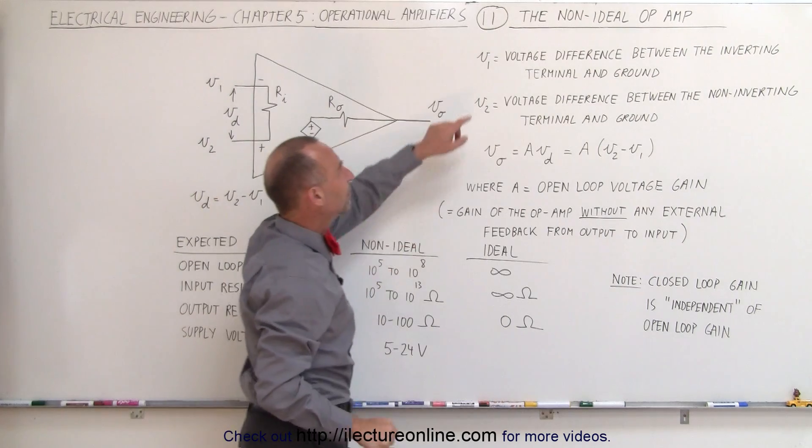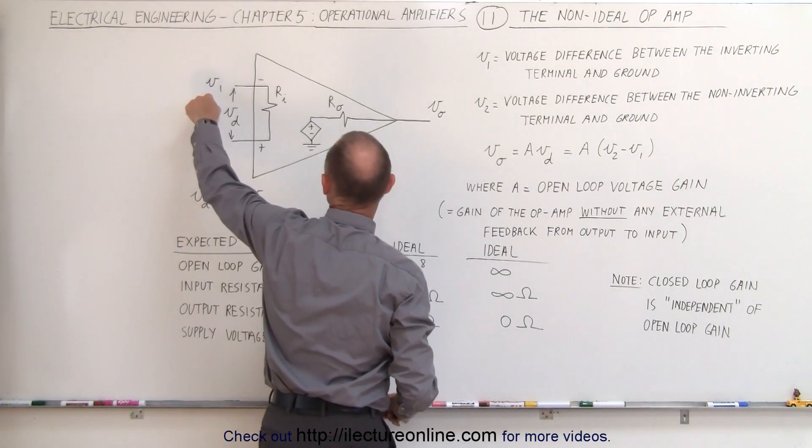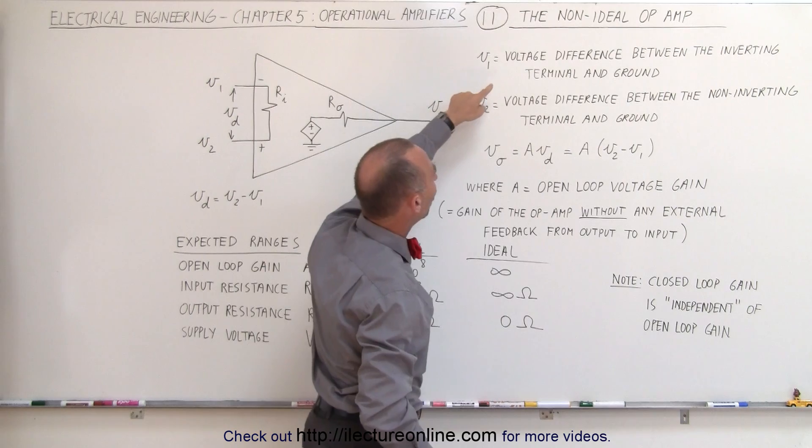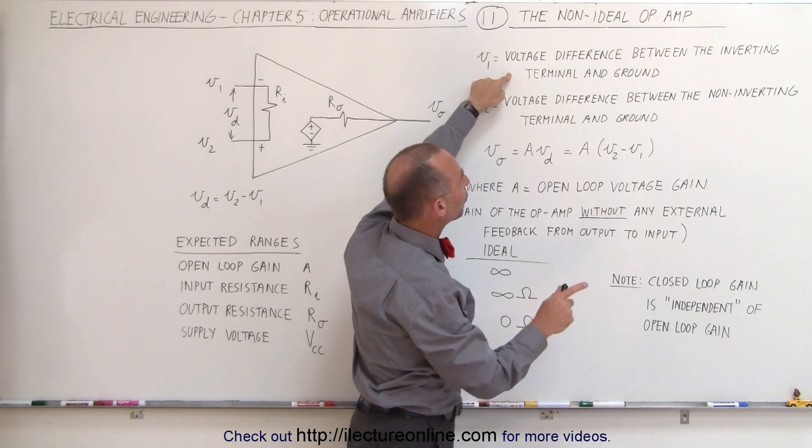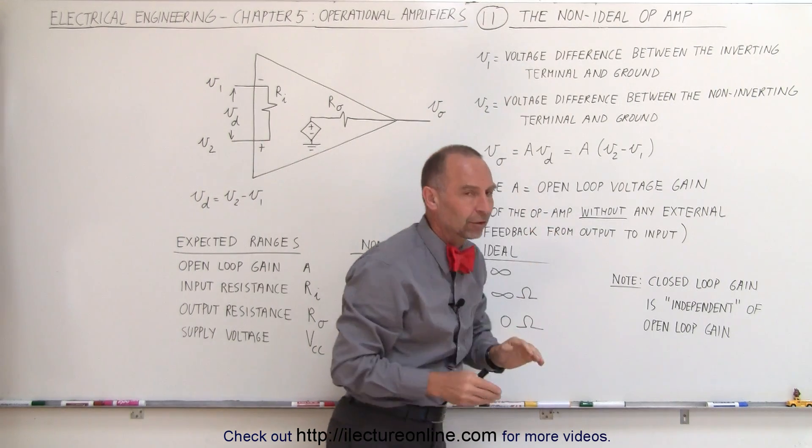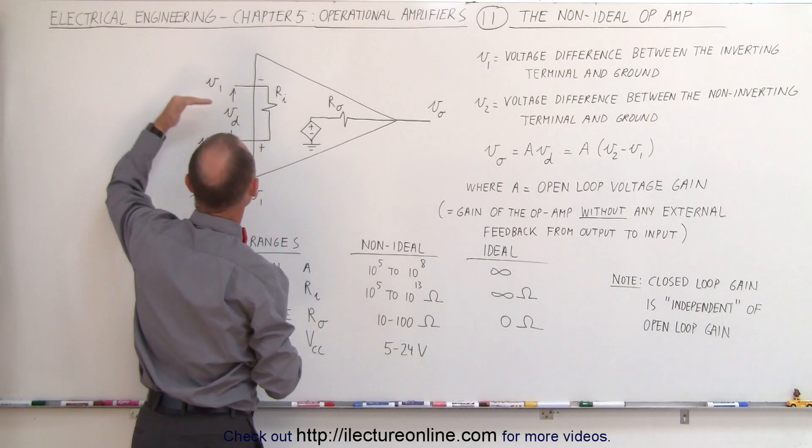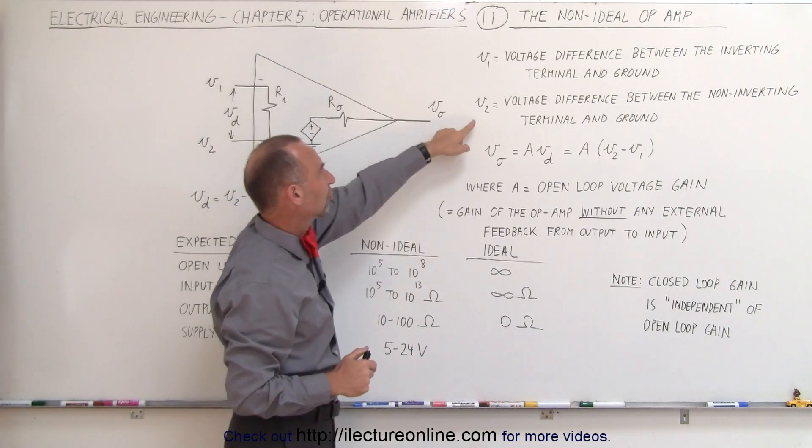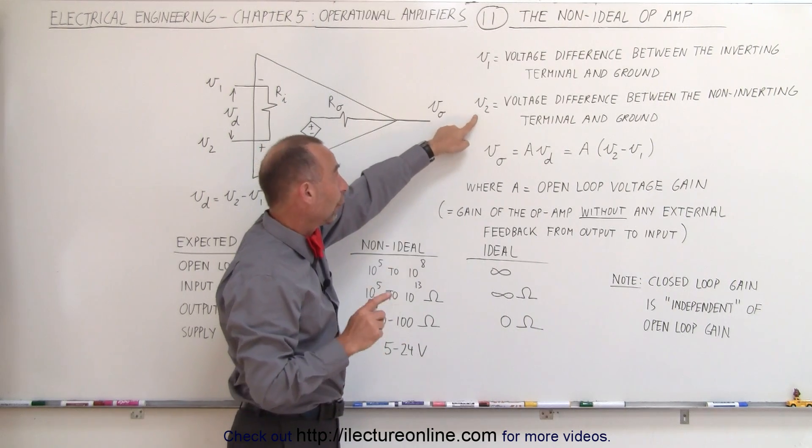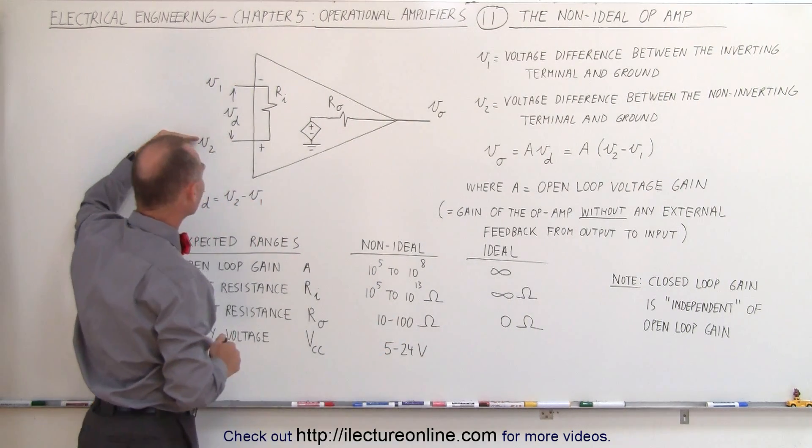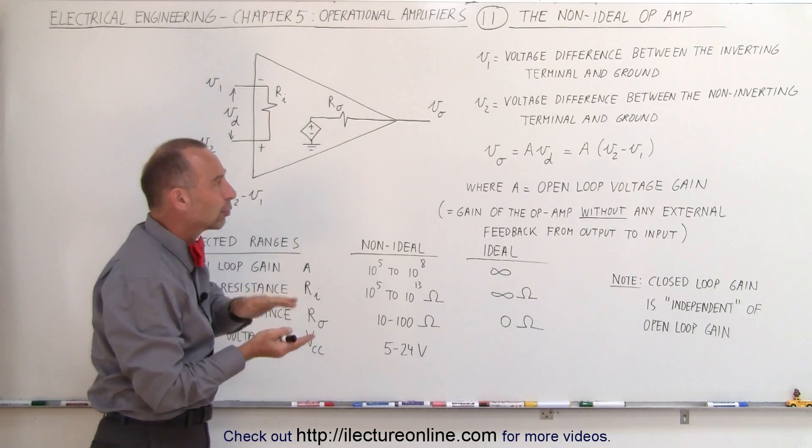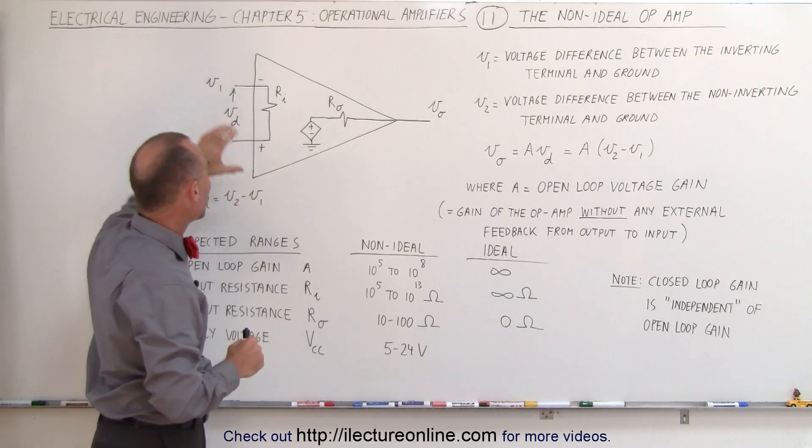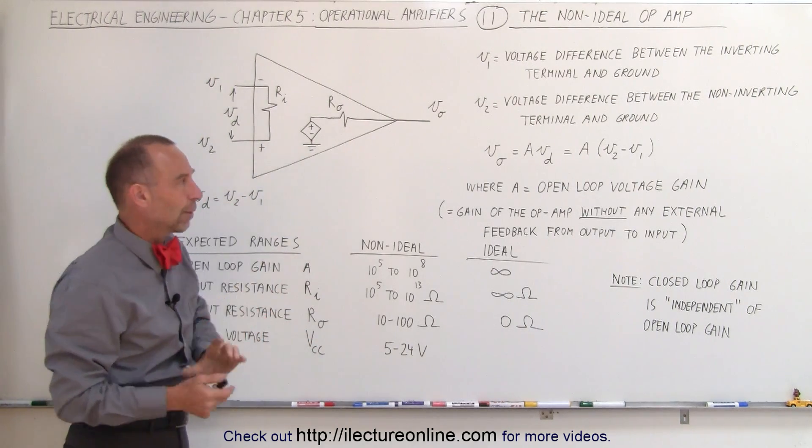Notice that V1, the voltage at the inverting input, is called the voltage difference between the inverting terminal and ground. So it is the difference between whatever this voltage is set to and ground. And the voltage difference, or V2, the voltage at the non-inverting input, is the difference between V2 and ground as well. So typically both of these voltages are referenced to ground.